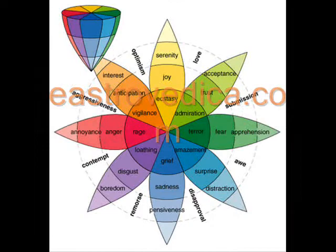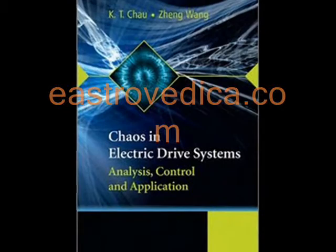Chaos Theory of mathematics tries to find a more meaningful correlation and behavioral pattern in such complex systems.